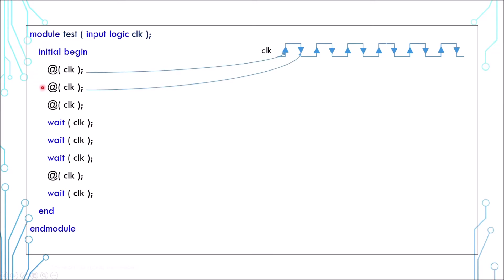The first statement @(clk), or wait for the clock to change, happens here. The second statement is the same and it happens here. The third one happens here. Now it continues to the wait statement.